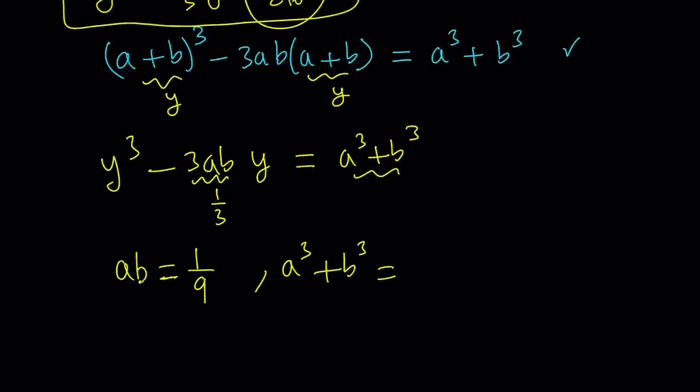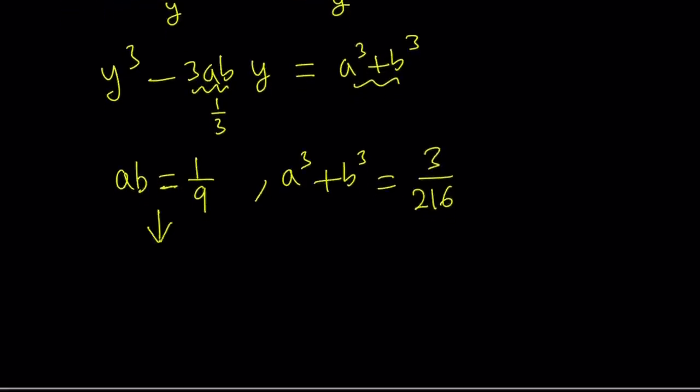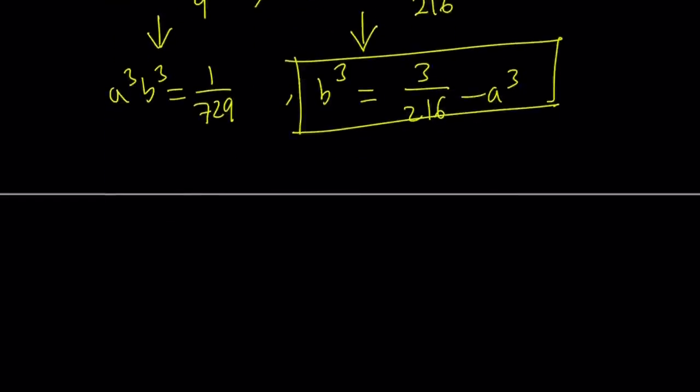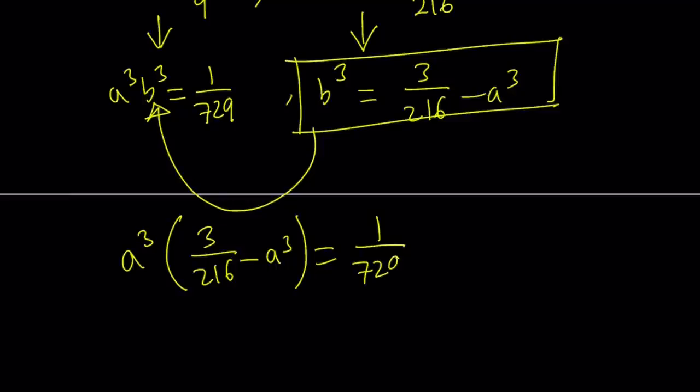But even though this equation or this system looks cubic, it's actually quadratic. We can go ahead and cube both sides. a cubed times b cubed equals 1 over 729, which is 9 cubed. And then here a cubed plus b cubed, we can isolate b cubed, write it as 3 over 216 minus a cubed. I told you it's a painful method, but it works. So now we can substitute b cubed here, and that's going to give us a cubed times 3 over 216 minus a cubed equals 1 over 729.